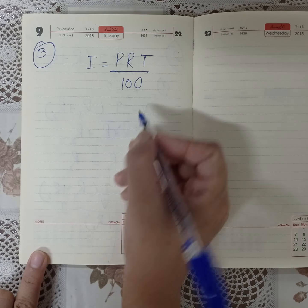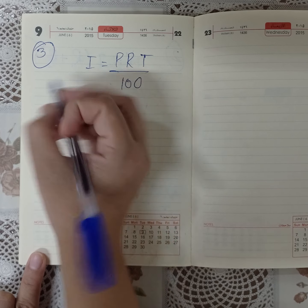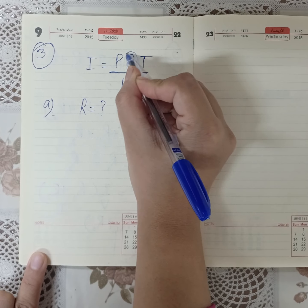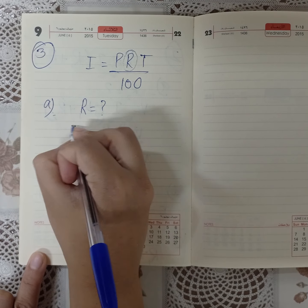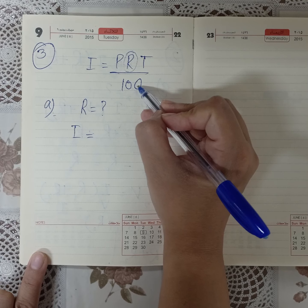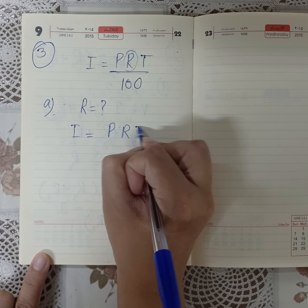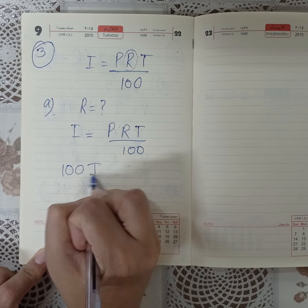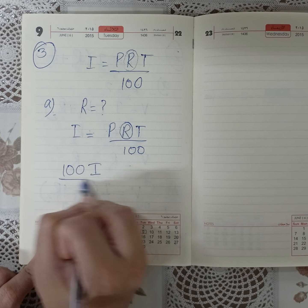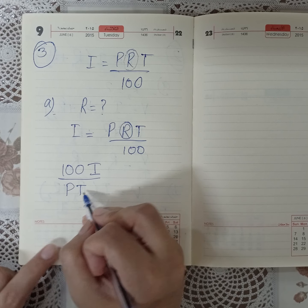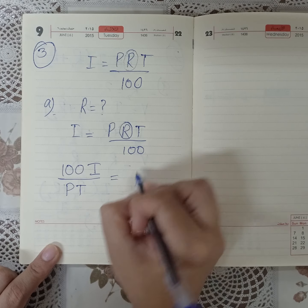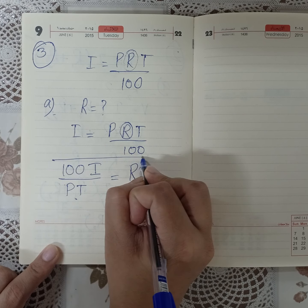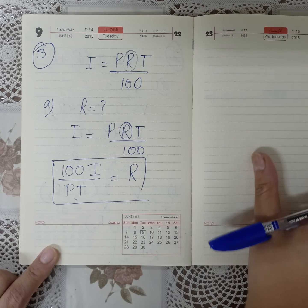Question 3: the formula is I = prt / 100. Find r as the subject. The 100 being divided will multiply on the other side giving 100I, and the other two terms p and t being multiplied will divide on the other side. You can do it in two steps: first multiply both sides by 100, then divide by pt, giving r = 100I / pt.